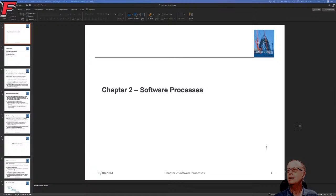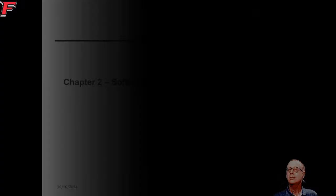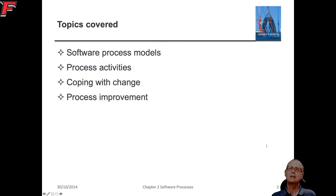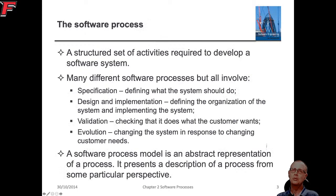Chapter two is about software processes. There are lots of different ways that you can do software, and there are some things that you really should do, but there are lots of different ways you can do those things. Topics covered include software process models, the activities you should do, how to cope with change, and how to improve your processes.